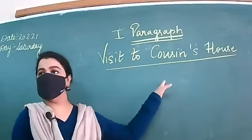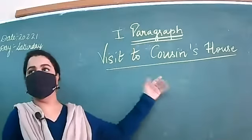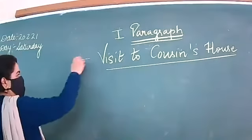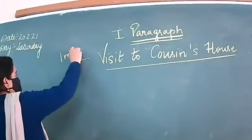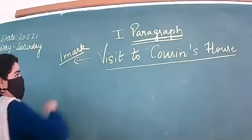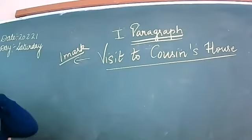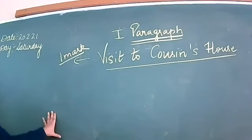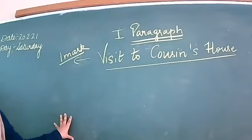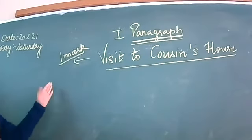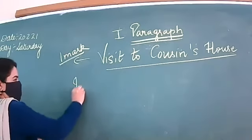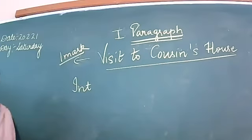Our topic is 'Visit to Cousin's House.' First, all of you please write down the title — this is for one mark. I told you last time also: first of all you will give an introduction. Maybe in class 6th I said this thing. So first write down the introduction for two to three lines. Don't write the word 'introduction' directly; start your paragraph.